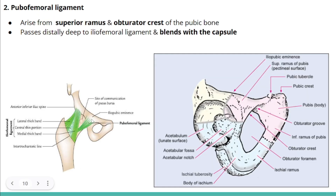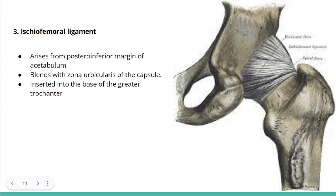The pubofemoral ligament arises from the superior ramus and the obturator crest of the pubic bone, and it passes deep to the iliofemoral ligament and blends with the hip joint capsule. The ischiofemoral ligament is clearly seen in the posterior aspect — it arises from the posterior inferior margin of the acetabulum, blends with the zona orbicularis of the capsule, and inserts into the base of the greater trochanter.